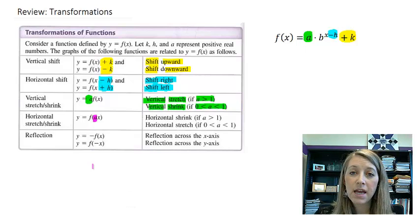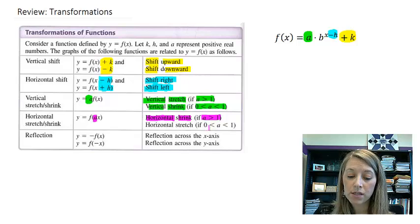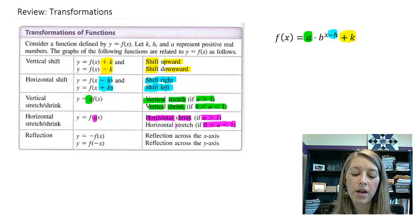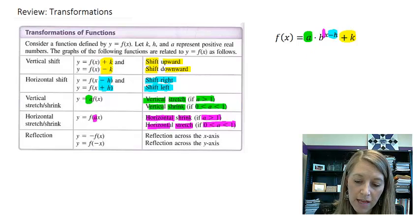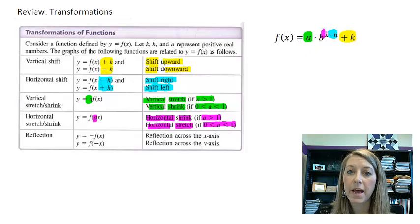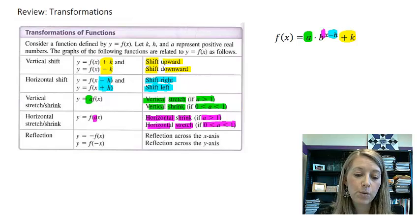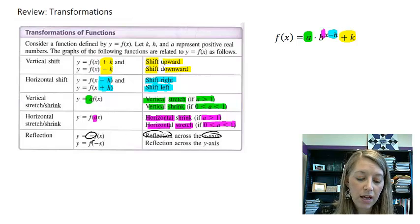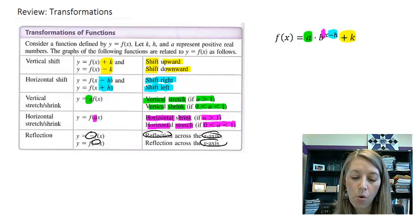If your a is on the inside of the function, it's still stretch or shrink, but it's horizontally. Remember, it's backwards. If you have a bigger number, it shrinks it horizontally. If you have a smaller number, it stretches it horizontally. And so I didn't include that here, but that's what something multiplied by x would do. And then last but not least, if you have anything multiplied by negative, it's going to reflect it. Outside is going to reflect it vertically. Inside is going to reflect it horizontally.